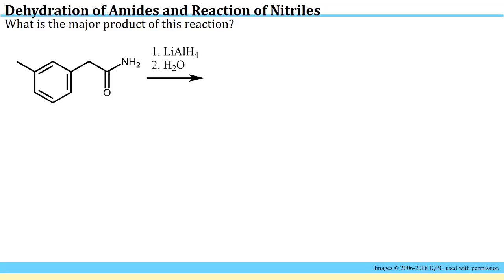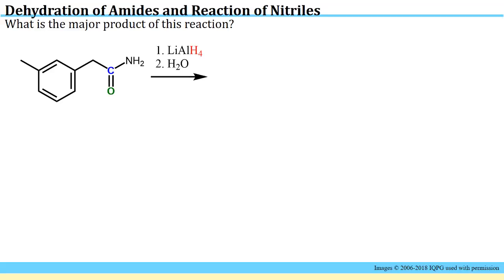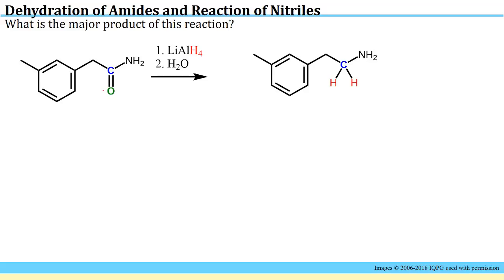Our first problem asks about the major product of this reaction. We first have to identify what the reactive pieces of this equation are. We can see that there are nucleophilic hydrides on this lithium aluminum hydride, and there is an electrophilic carbon with a partial positive charge as part of this amide unit. In the primer we saw that we will have addition of these nucleophilic hydrides to the carbon, and eventually this oxygen will leave as a salt. The net result is you've replaced both of these bonds in the C=O double bond.